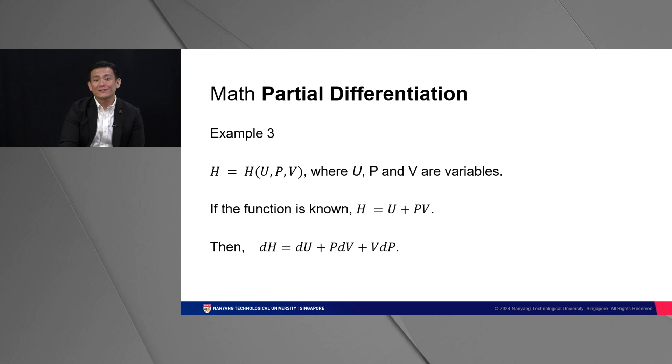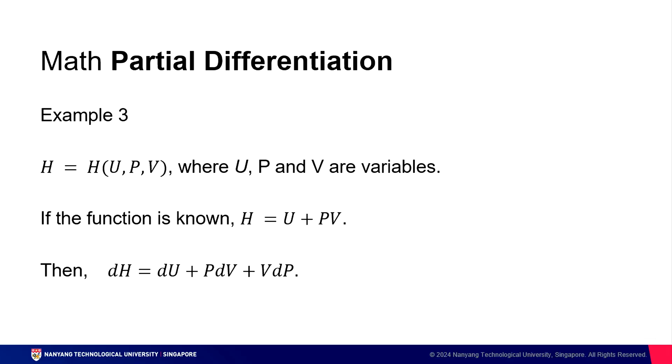In this third example, I want to go through a simple rule which you will encounter quite often in this course. Let's consider this equation over here, where H equals H as a function of U, P, and V. However, in this case, we actually know the function as H equals U plus PV. What happens when we differentiate H equals U plus PV? Let's do the straightforward one first. Partial H over partial U, keeping P and V constant. So that's one, because you can ignore the P and V term.